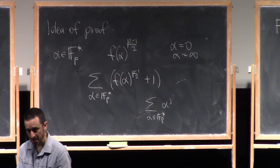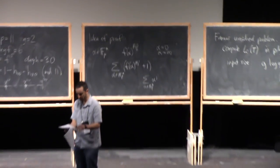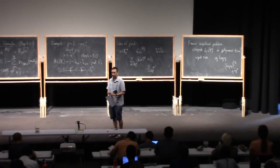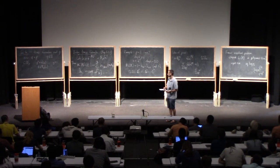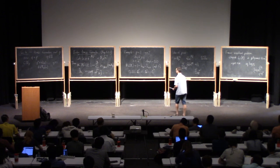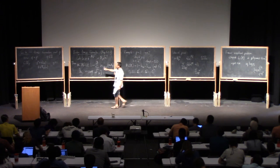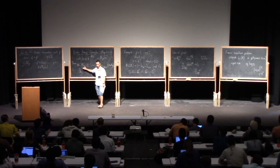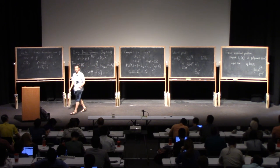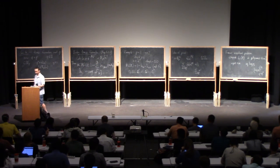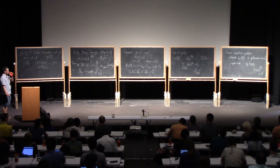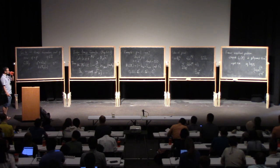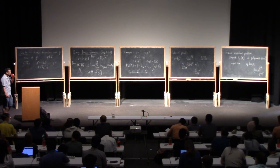So next time, which is tomorrow, we will look at the adult version, maybe grown-up version is a better phrase, which is going to give us a similar congruence for a number of points over an extension of F_P. All right, cool. Thank you. Okay, are there questions?